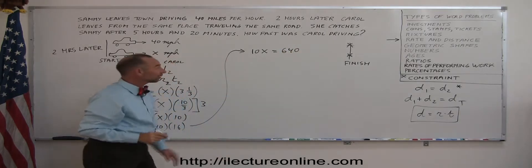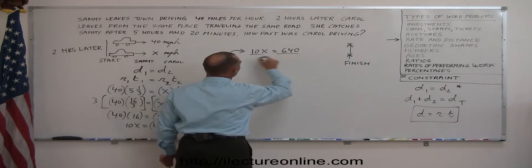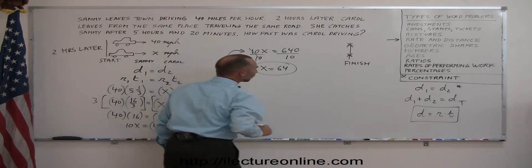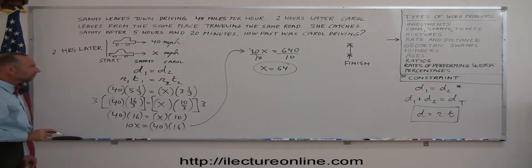And now I can go ahead and divide both sides by 10. That cancels this. And I get x equals 64. So 64 is the rate at which Carol travels.